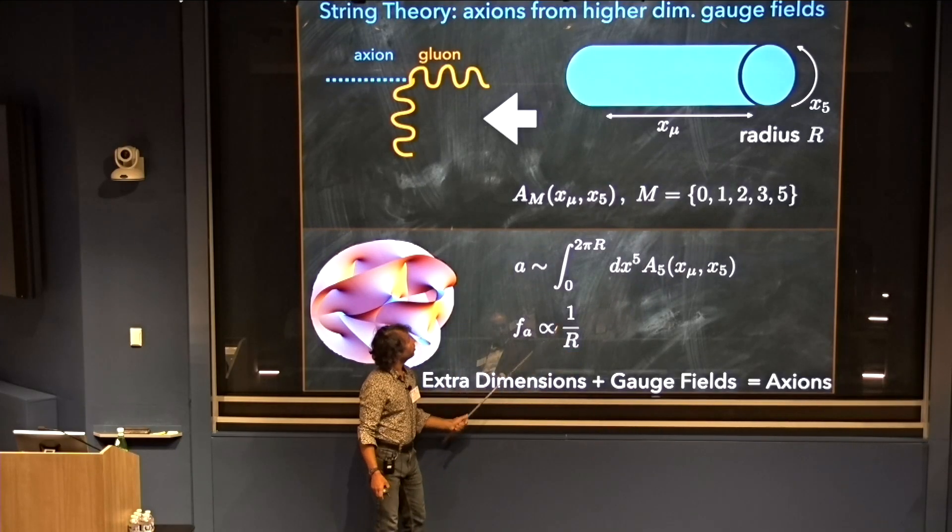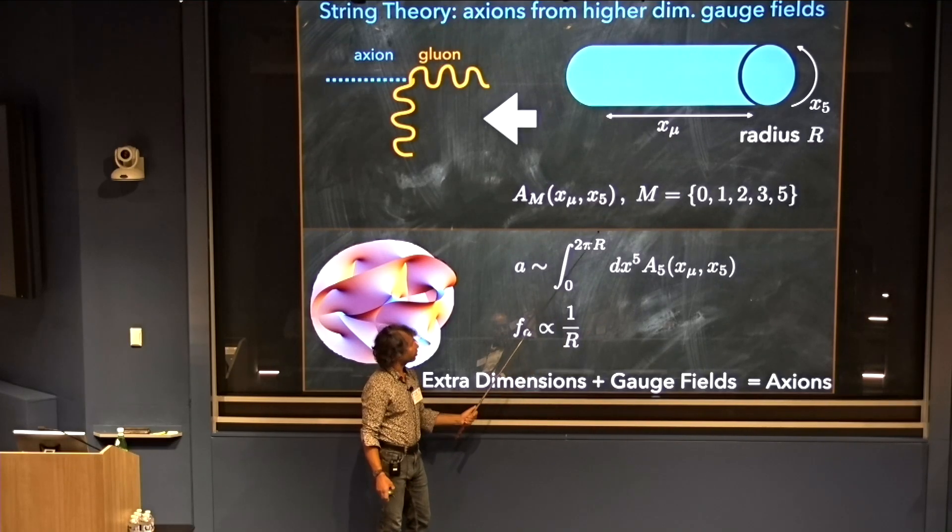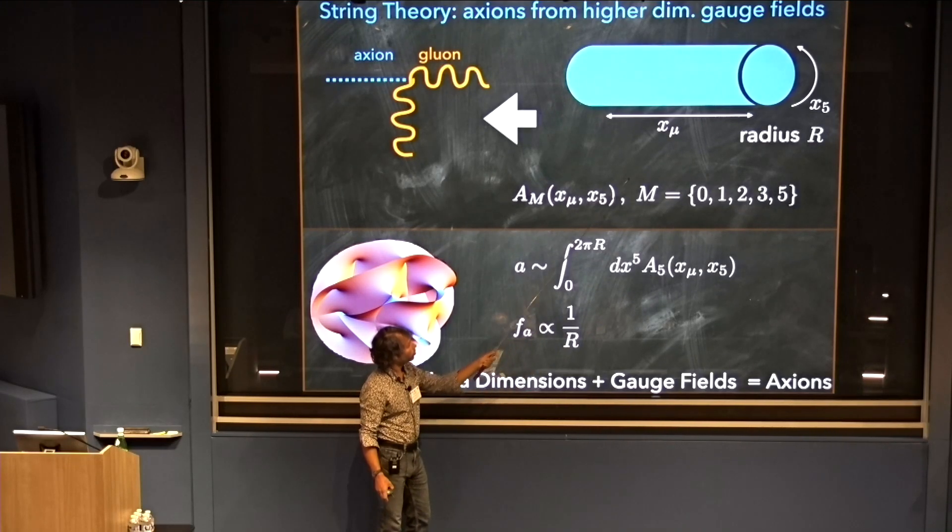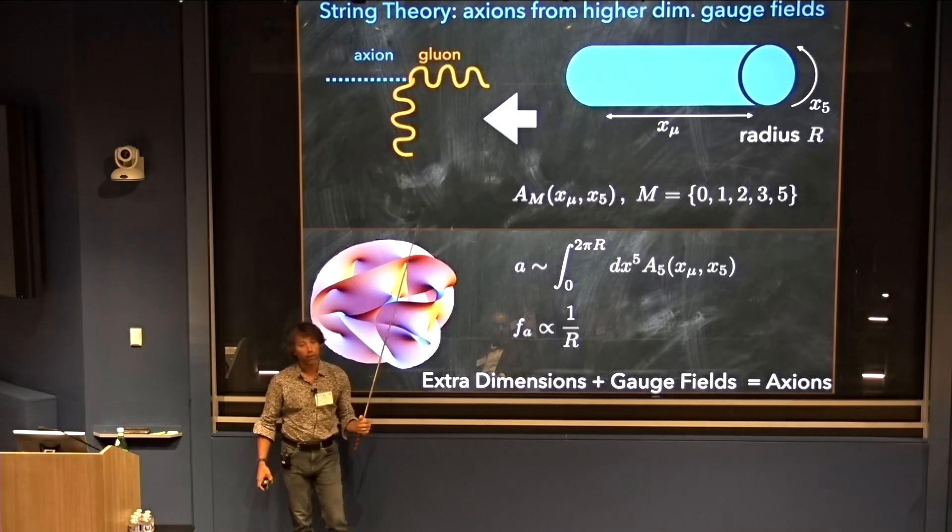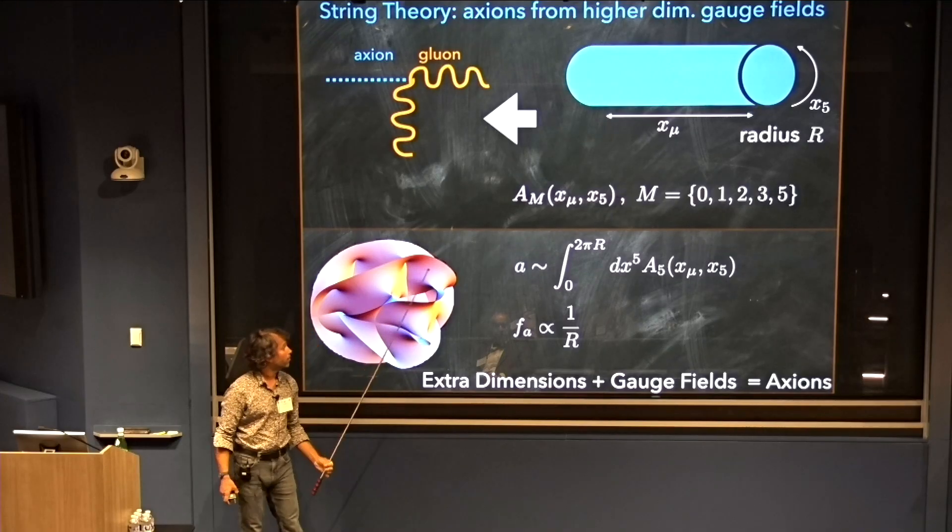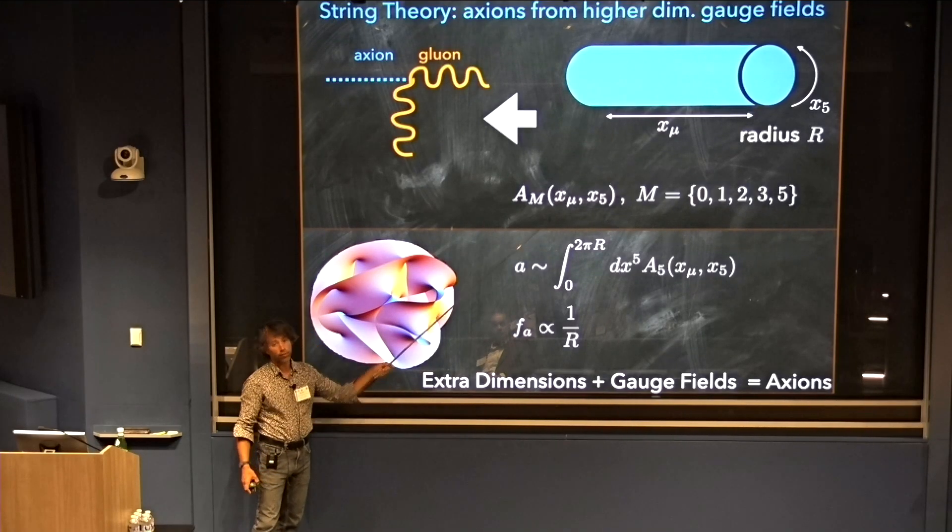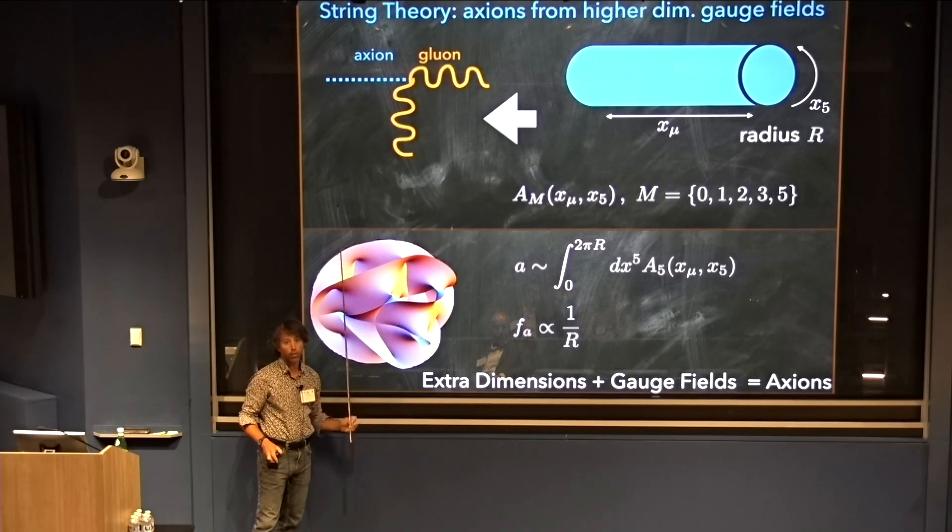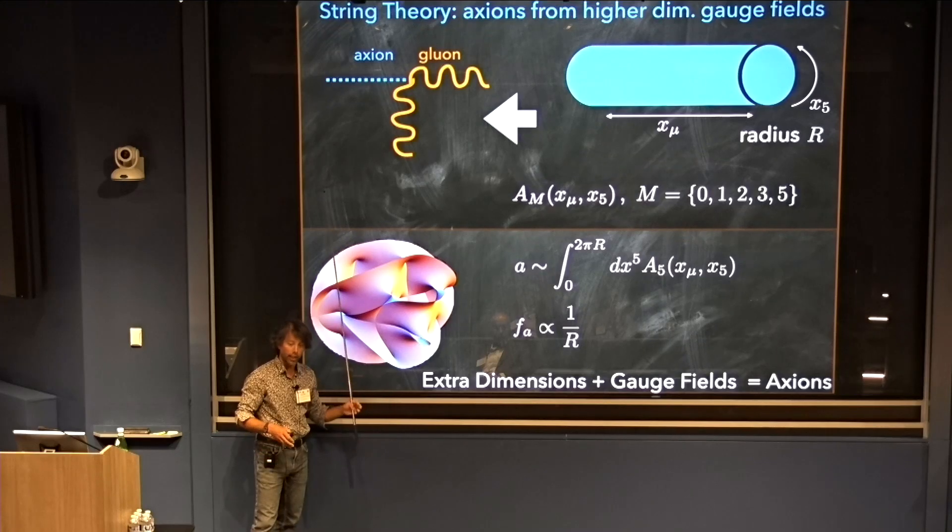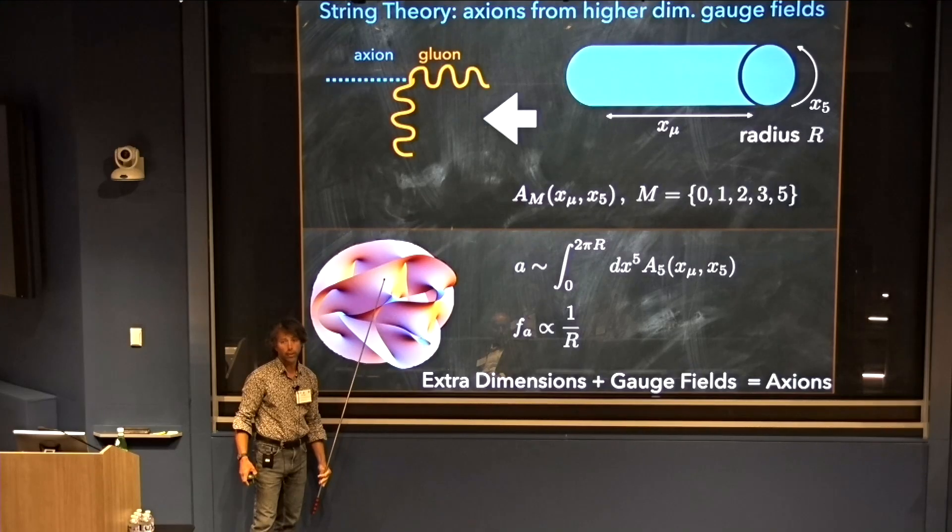The component of this gauge field along the fifth direction, more specifically, an integral around the circle of A_5, behaves like an axion from the point of view of that four-dimensional effective field theory. And the decay constant of that axion is inversely proportional to the size of the circle. So this is what I mean when I say an axion is born at some energy scale and acquires a decay constant at some energy scale. In this case, that energy scale is the size of the extra dimensions that give rise to the axion.